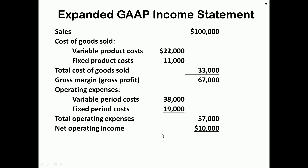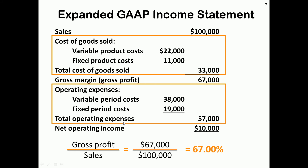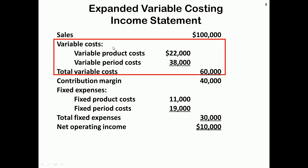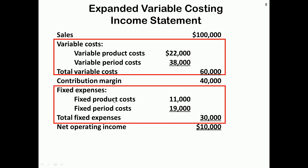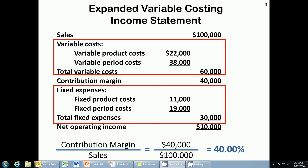Looking at the full costing income statement, costs based on function show product costs included in cost of goods sold and period costs reported as operating expenses. Gross profit of $67,000 divided by sales of $100,000 means 67 cents out of every sales dollar is available to cover operating expenses and to contribute to profit. On the variable costing income statement, variable costs appear separate from fixed costs, with contribution margin shown in the center. Dividing the contribution margin of $40,000 by sales of $100,000 gives us 40 cents out of every sales dollar available to cover fixed costs and contribute towards profit.